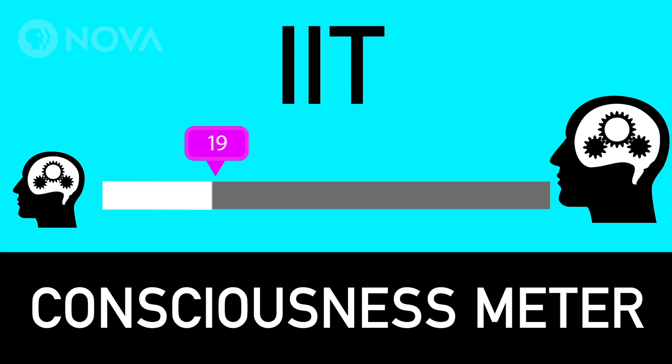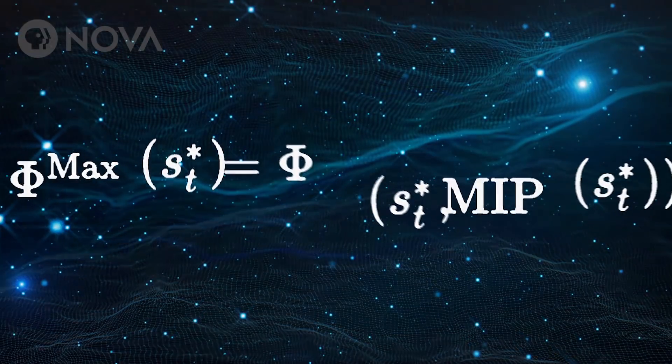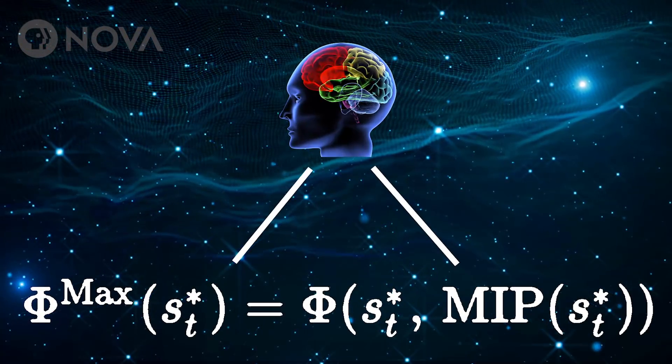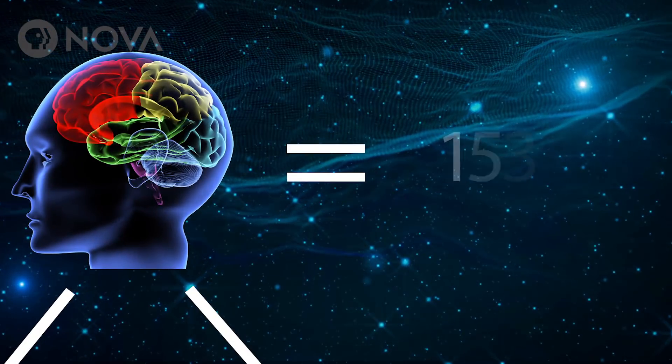So IIT provides a consciousness meter, a mathematical equation that, when applied to a brain or a machine, gives you a number for how much consciousness it has. That number is denoted by the Greek phi, because we physicists love our Greek letters.